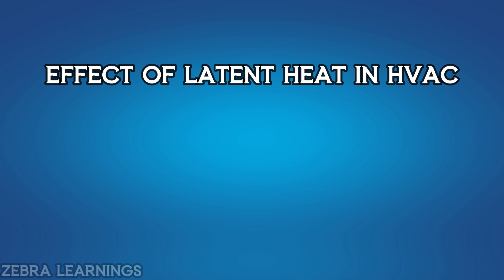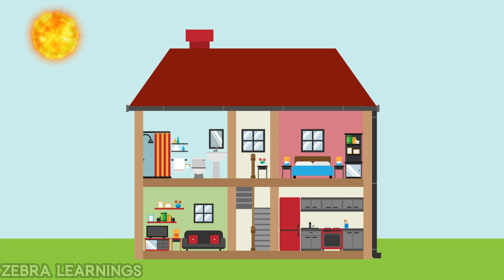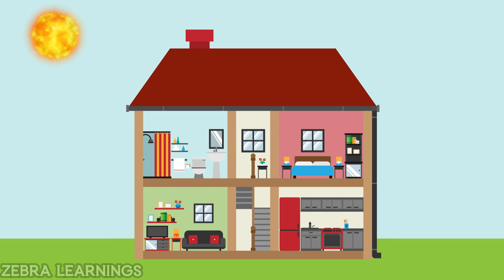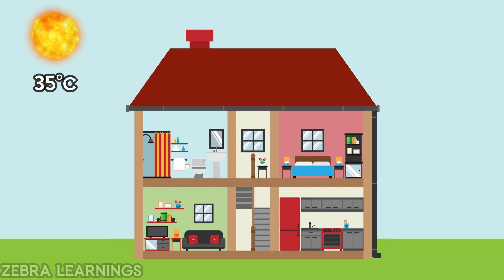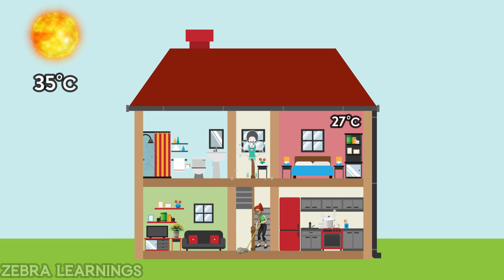Let's see what effect this has on HVAC. Let's consider a house. It is summertime, so the outside temperature is 35 degrees Celsius. The temperature inside the house is 27 degrees Celsius.